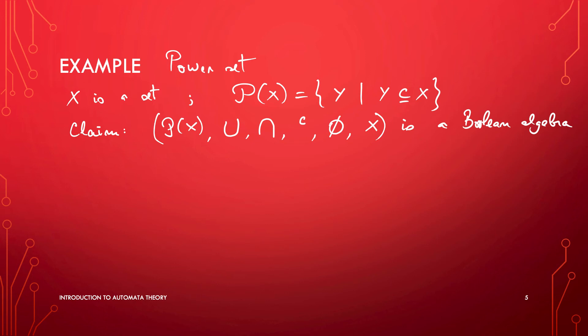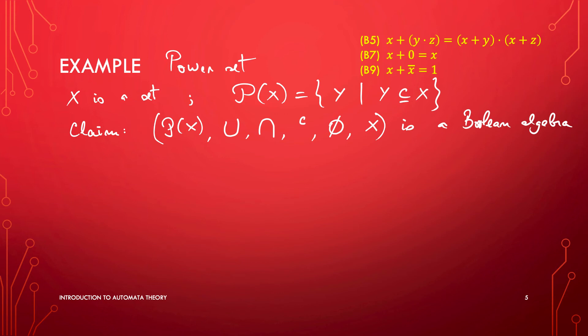To prove this, we have to show that properties B1 through B10 hold for this structure. Properties B1 to B4 are about the associativity and commutativity of set union and set intersection, which we know very well hold. For properties B5 through B10, I'm going to focus on B5, B7, and B9, and leave the others as an exercise since they are completely similar.